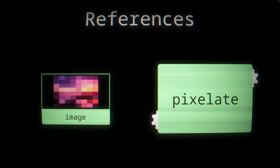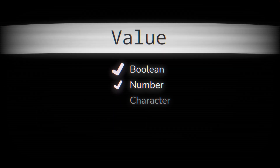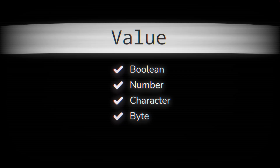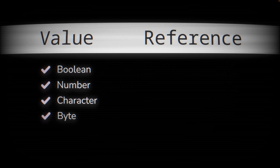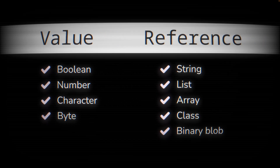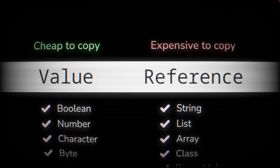Because passing a variable by value means the data is copied, most high-level languages by default pass by value only for small pieces of data — booleans, numbers, individual characters, and bytes. But for larger or arbitrarily sized types of data, often a reference is used by default. Most languages will pass by value for data that's cheap to copy, and by reference for data that's expensive to copy.